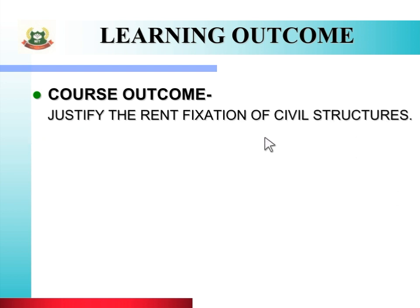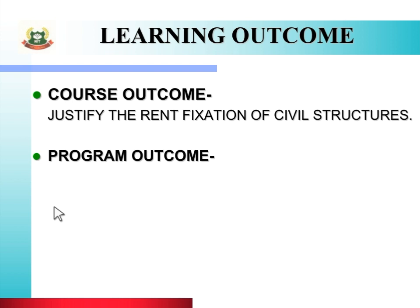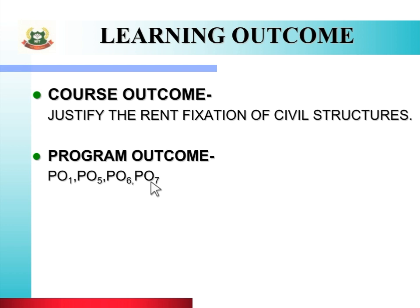The course outcome includes: justify the rent fixation of civil structures. The program outcomes related to this topic are PO 1, PO 5, PO 6, and PO 7.